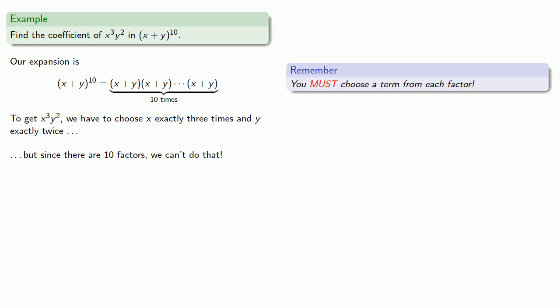And so this is a pretty easy problem. For example, the coefficient is zero. And in a kind and gentle universe, all binomial expansions would be this easy. We don't live in that universe.